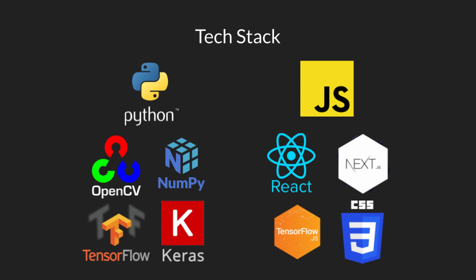We developed and trained our machine learning model in Python, using TensorFlow and Keras for deep learning, OpenCV for edge detection and image pre-processing, and NumPy for data arrays. We used Next.js and React.js, which include HTML, CSS, and JavaScript programming languages, to build the front-end, along with OpenCV.js as well as TensorFlow.js to run the OpenCV pipeline and model in the user's browser.